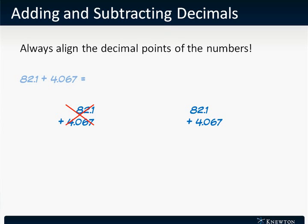We fill in these gaps with two trailing zeros following the 1 so that the number reads 82.100, as we see on this slide. Once we do this, we can do addition in the natural way that we've learned all along. The result is 86.167.